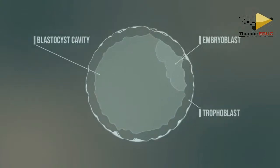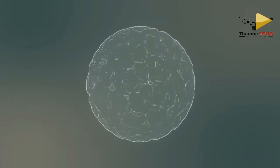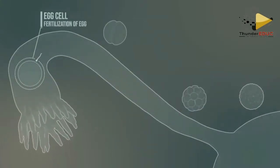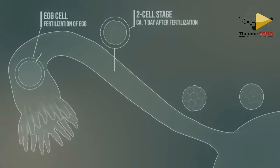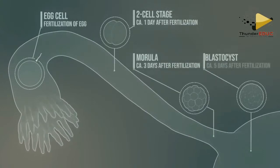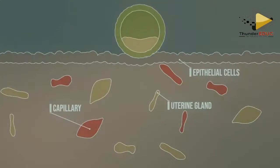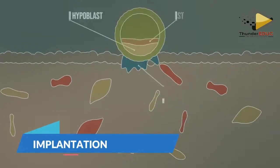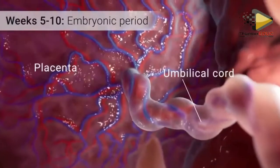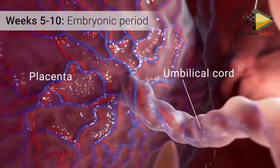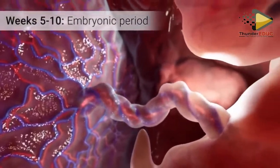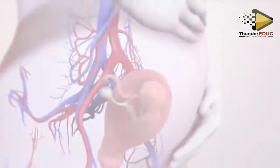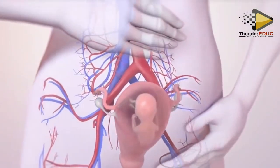It is the blastula which is used for implantation. Implantation occurs using the outer membrane called the chorion, forming finger-like projections called chorionic villi, forming the placenta afterwards.